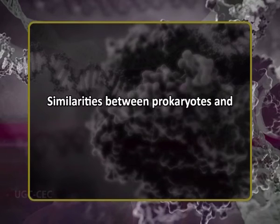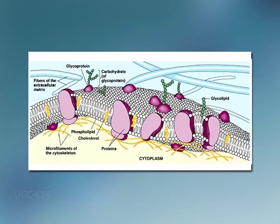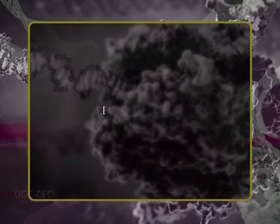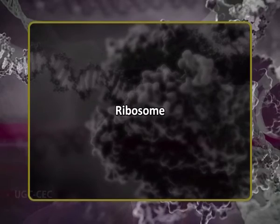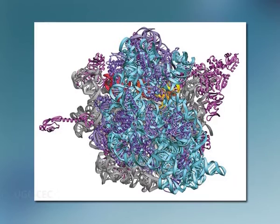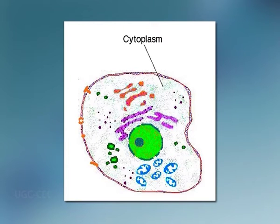Let us now know some similarities between prokaryotes and eukaryotes. First, both have a cell membrane or plasma membrane, which allows materials in and out and is important for cell survival. Second, both have DNA — a molecule that passes genetic information from generation to generation. Both also have ribosomes that help build proteins, and both have cytoplasm — the interior fluid of the cell where chemical reactions take place.